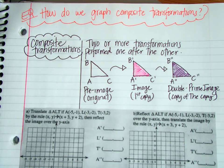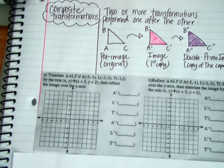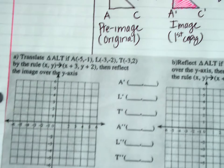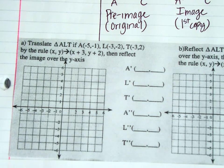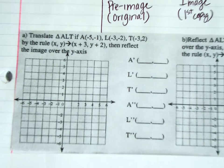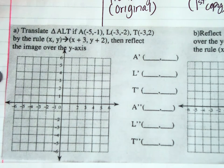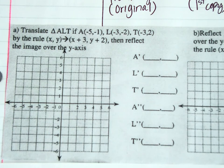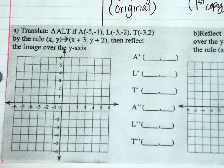So let's get started. First, we're going to translate triangle ALT where A is (−5, −1), L is (−3, −2), and T is (−3, 2). This time we don't have any pre-image on our paper — we are given coordinates that we have to graph. So we're going to graph the original and then perform the following transformations.